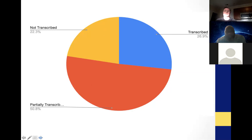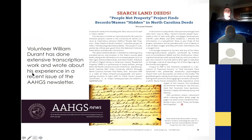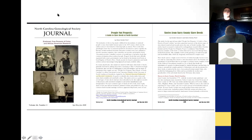This is where they also need volunteers — editing images so that there is one deed per image and one image per deed. If a deed carries over several pages, it'll be one image file. Volunteer William Durant has done extensive transcription and wrote about his experience in a recent issue of the AAHGS newsletter. He single-handedly transcribed all of Brunswick County — something like 2,500 deeds — a very dedicated volunteer.